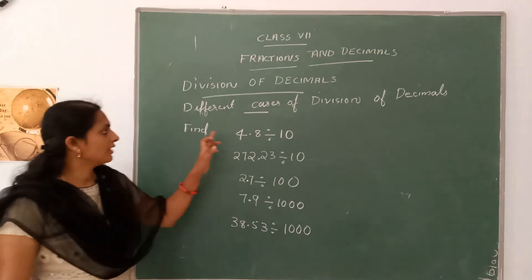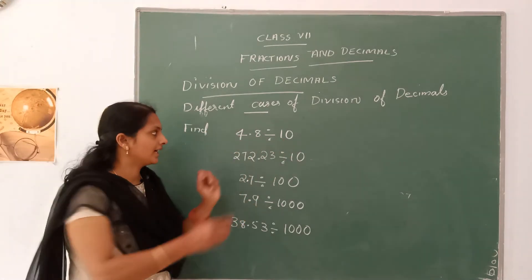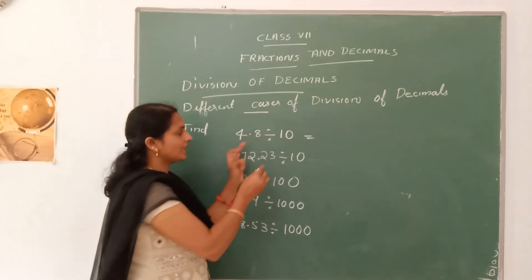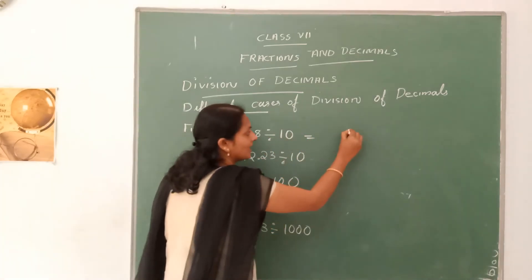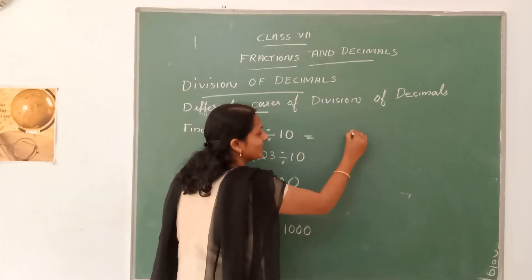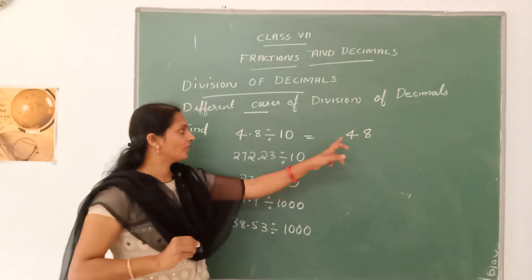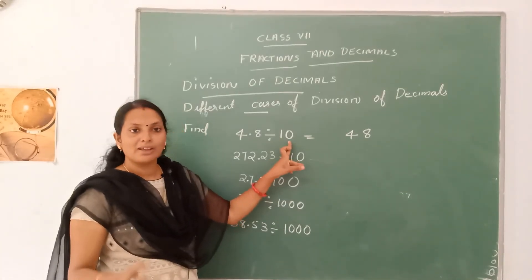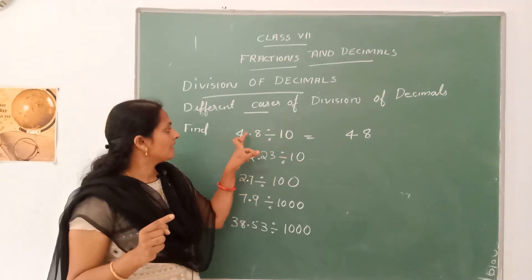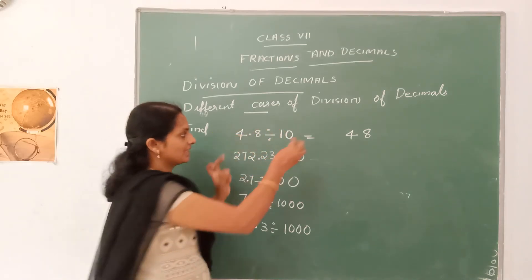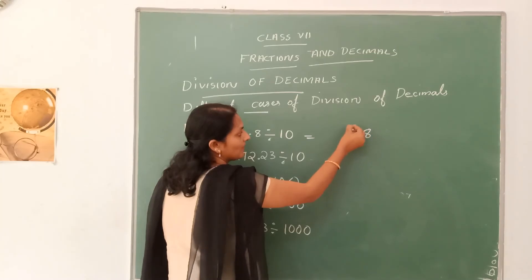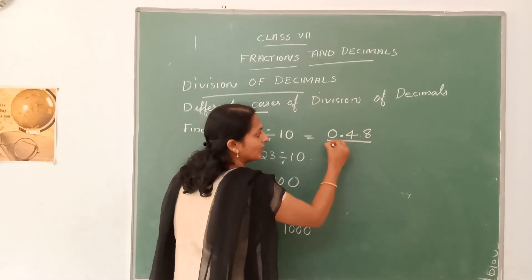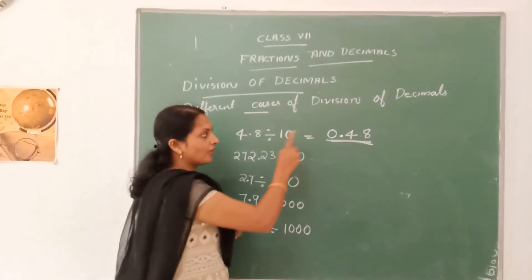Now find 4.8 divided by 10. First, write the dividend 4.8, remove the decimal to get 48. Since we are dividing by 10, the decimal moves from right to left 1 digit. Therefore, the answer is 0.48.